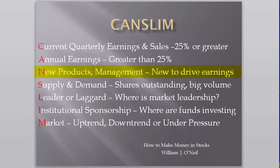The N in CAN-SLIM stands for New — New Products, New Management, or perhaps New Market Conditions. The N reminds us that we need something new and exciting to sustain longer-term profit. The S in CAN-SLIM stands for Supply and Demand, and reminds us that we want to favor stocks that have an average daily volume of at least 500,000 shares and trade at least 140% of their average daily volume on the day that they break out.